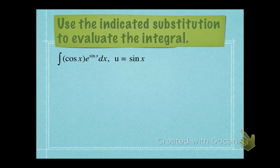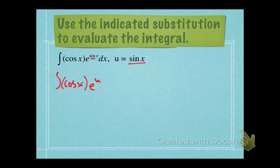Let's look at that same indefinite integral. Let's try making a substitution of letting u equal sine x. When we take this integral, we would have cosine x times e to the power of u — because we're making that substitution — and then we still have our dx. The problem is we've introduced a new variable u while our variable of integration is dx, and we can't integrate in that situation. So we need to solve for du so that we can get it into our integral.